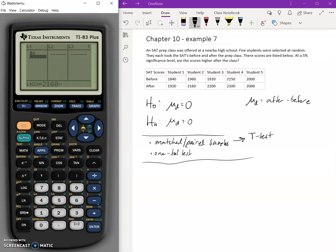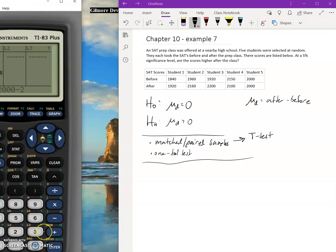When we enter our numbers, we're going to type in after minus before for each of these. So we'll do 1920 minus 1840, and I'll let the calculator do the subtraction. Then 2160 minus 1960, then 2200 minus 1920.